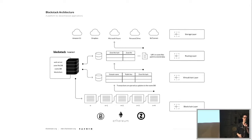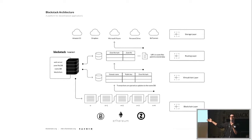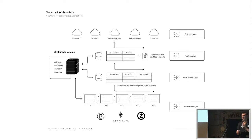The zone file then points to resources the user has created with Blockstack applications. Those resources can be stored anywhere — a personal server, Dropbox, BitTorrent, or IPFS. Blockstack doesn't care where they're stored. All Blockstack cares about is whether the registration on the blockchain is valid — meaning nobody else registered the name first and it contains no invalid characters — and what resources that name points to.